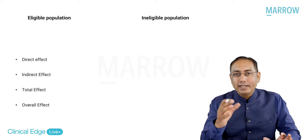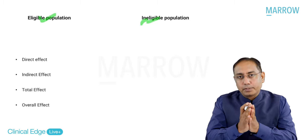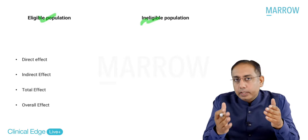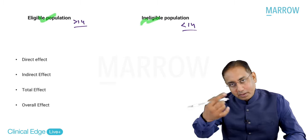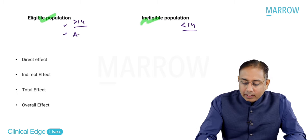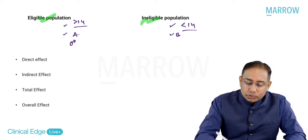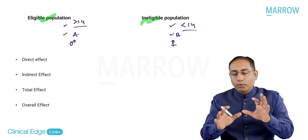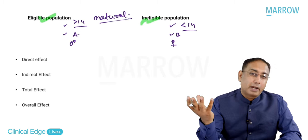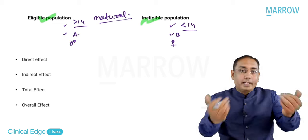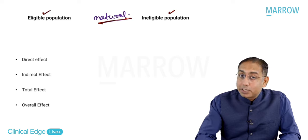QED designs depend on the concept that there are two types of population: those who are eligible and those who are ineligible. For vaccine trials, if our country says age more than 14 years will get a COVID vaccine, then age more than 14 years automatically becomes the eligible population and age less than 14 years becomes ineligible. Similarly, if a vaccine is introduced in district A but not district B, district B becomes ineligible and district A becomes eligible.